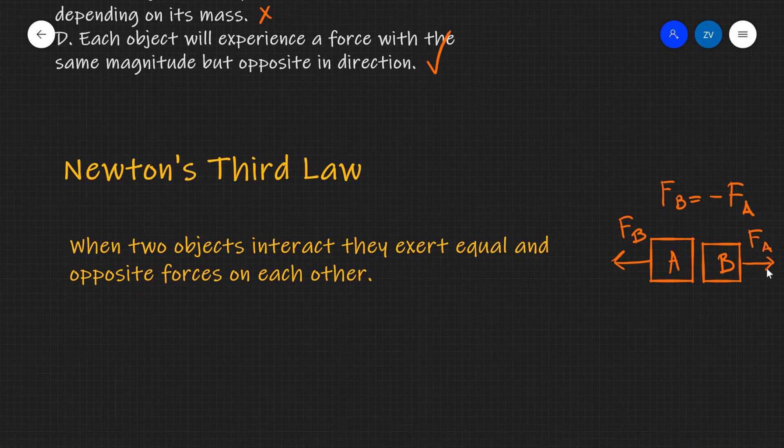And object B FB is going to experience a force due to object A and FB is going to be minus FA. This minus sign indicates that the two forces are in opposite direction.